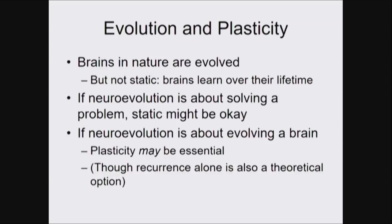It may be essential to have plasticity, though theoretically a recurrent network, through cycling activation alone, can also do a kind of learning over a lifetime. So it's somewhat of a topic of debate whether plasticity is essential. But I think what most of us would agree on is that in practice, plasticity will make the search greatly more efficient than if you had to rely only on recurrence. And we'll see some evidence of that.